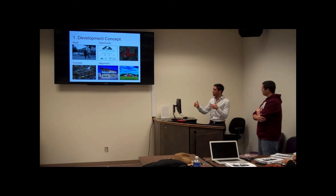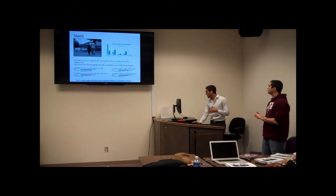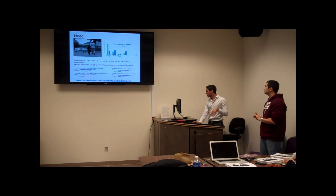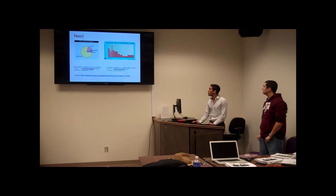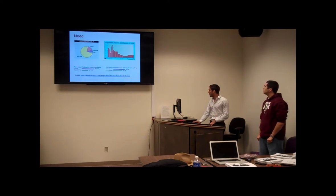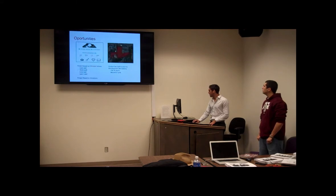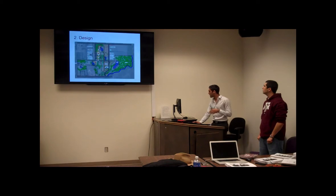These slides show some stats on the poor economic situation of the people of Como, including the racial demographics — mostly African American — and very low income. These are the opportunities we explained for Rivertree Academy, the piece of land, and the concept alignment.